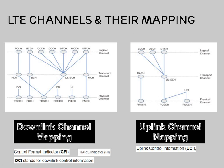In the uplink channel mapping, we have PRACH mapped to RACH for RACH procedures. PUSCH carries data from UL-SCH, CCCH, and DCCH. There is also one channel — PUCCH — which carries UCI (Uplink Control Information). This is the role of PUCCH in the uplink.